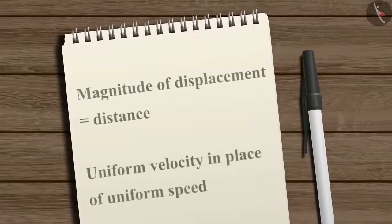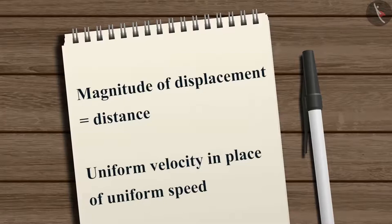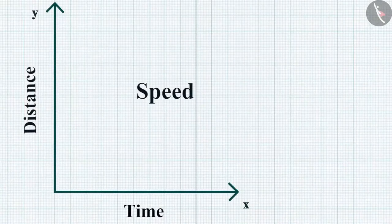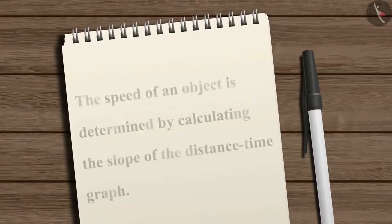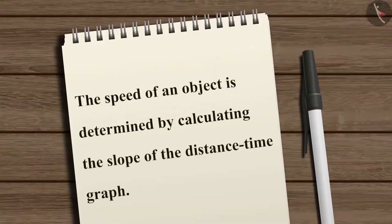If the magnitude of displacement equals the distance traveled by the object, we can use the term uniform velocity in place of uniform speed. We can also determine the speed of an object from the distance-time graph by calculating the slope.